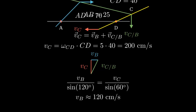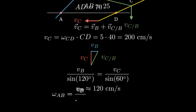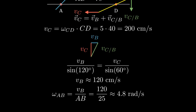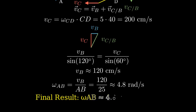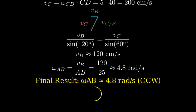V underscore B is approximately 120 centimeters per second. Omega underscore AB equals V underscore B slash AB. Omega underscore AB equals 120 centimeters per second slash 25 centimeters, approximately 4.8 radians per second. Therefore, the angular velocity of link AB is approximately 4.8 radians per second. From the velocity triangle, we can see that the direction is counterclockwise.